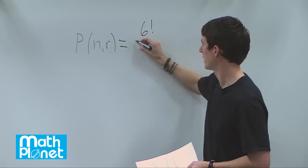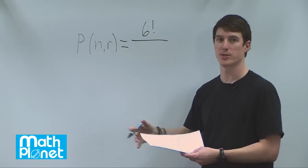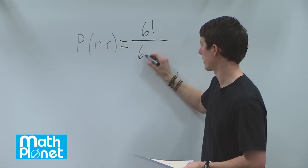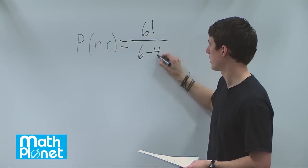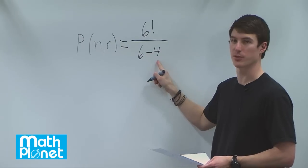six factorial divided by the difference between the total possible and the total that are there to fill in those permutations. So the difference being six minus four. So there were six options, six chairs, four friends, so we need to find this difference here.